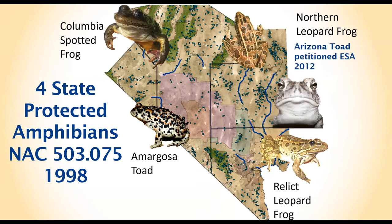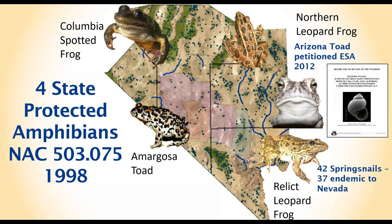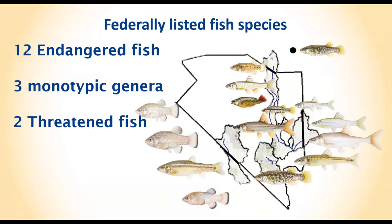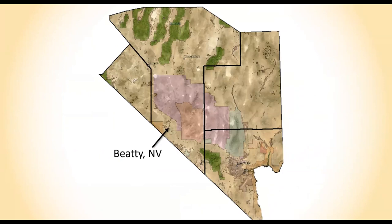The Arizona toad is also petitioned for listing. Spring systems are important for endemic species like spring snails, some of which occur entirely in springs just a meter wide and nowhere else in the world. Much of Kevin's work involves federally listed fish species, as many of these species protect the watershed from overexertion.